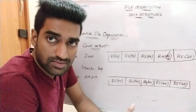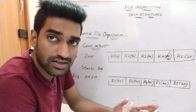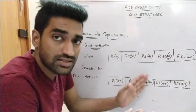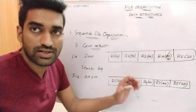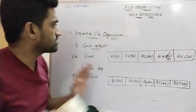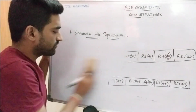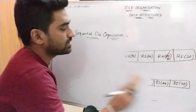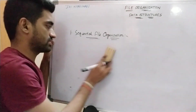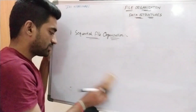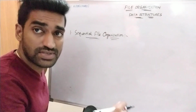So this is about the count method. These are the three methods to improve the performance of sequential search, and they come under self-organized sequential search, which is about improving the linear search or sequential search process.